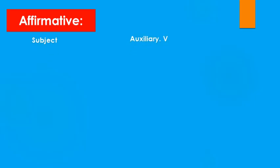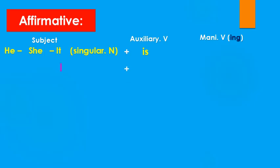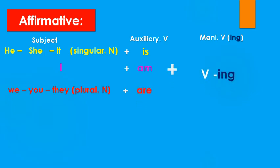For the affirmative, we have: subject, then the auxiliary verb, then the main verb with -ing. If the subject is he, she, it, or any singular noun, we add 'is'. If the subject is 'I', we add 'am'. If the subject is we, you, or any plural noun, we add 'are'. All of them with verb -ing, then the full stop.